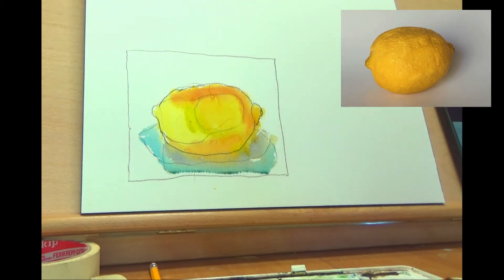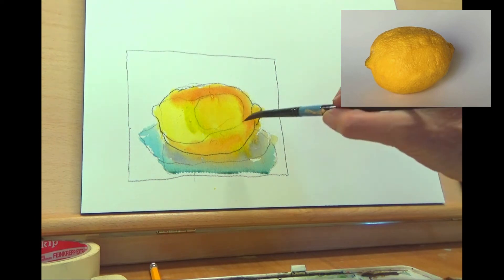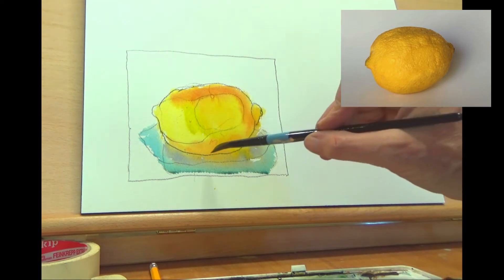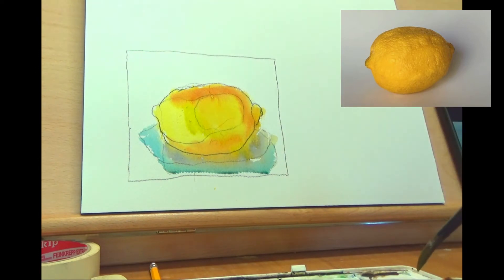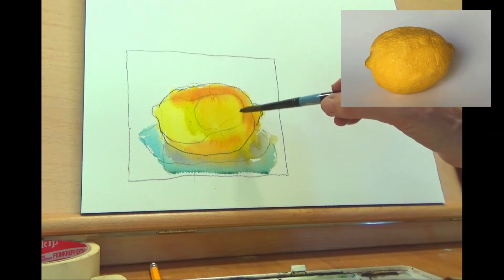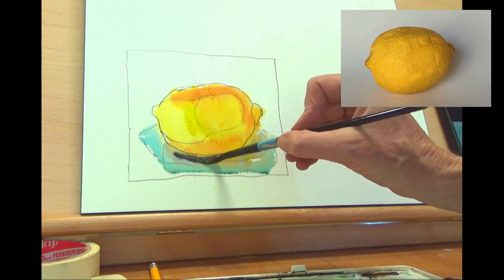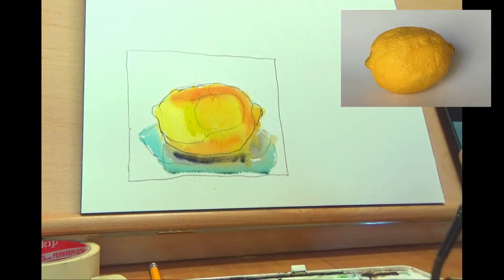You put the color down wet on wet, and that wet on wet makes it bleed a little bit like that, which is fine. Even this is bleeding into the yellow is bleeding into the shadow. So now I'm going to come back in, and if you look there's a really dark shadow right underneath.